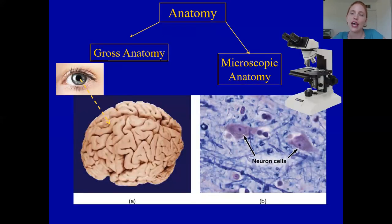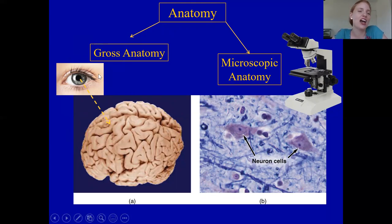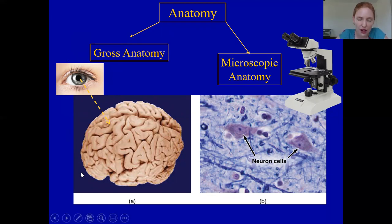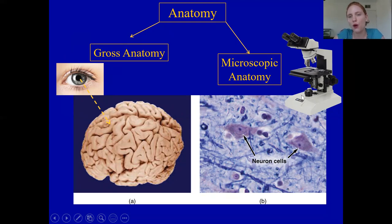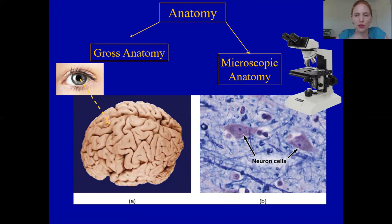Anatomy can be broken into two general areas. First, you have gross anatomy — and no, not talking about cats — gross anatomy just means things that are big enough to see with your naked eye, like whole organs such as a brain, or whole structures like bones. Then you have microscopic anatomy, which means things so small that you're required to use a microscope. Cellular structures or protein filaments are all microscopic because they're very, very small. Micro means small.